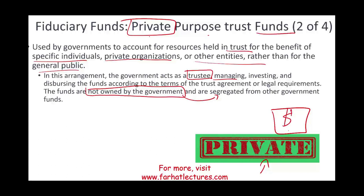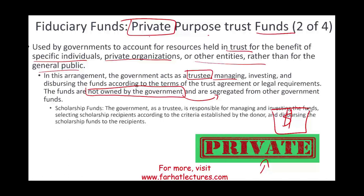This money is used specifically for a designated purpose. For example, scholarship funds: the government as trustee is responsible for managing and investing the funds, selecting scholarship recipients according to criteria established by the donor, and dispersing the scholarship funds to recipients. Rather than creating your own organization, you can have the government do this. When you give this money to the government, they keep it in a separate fund called the private purpose trust fund.